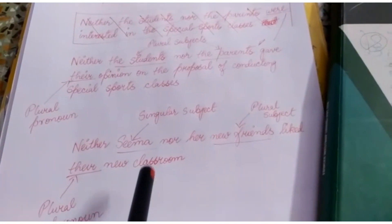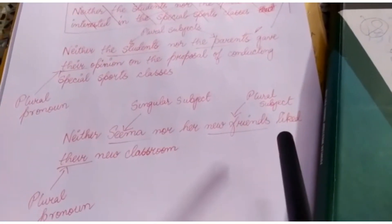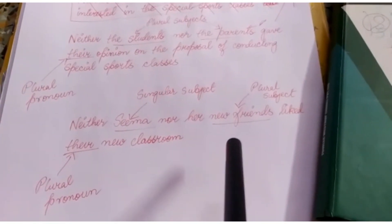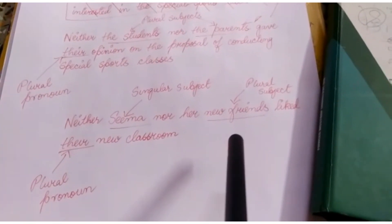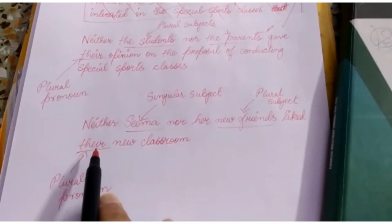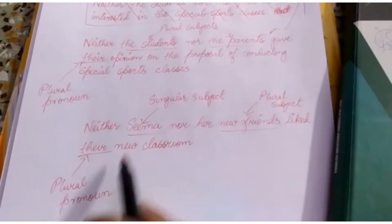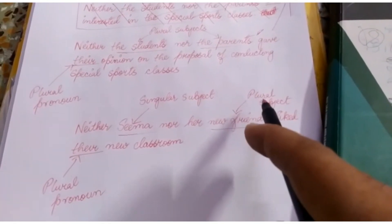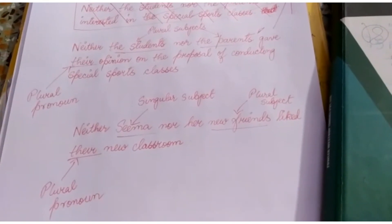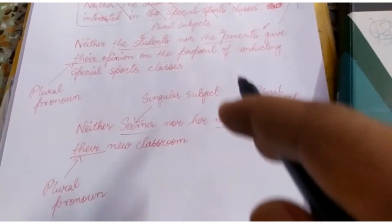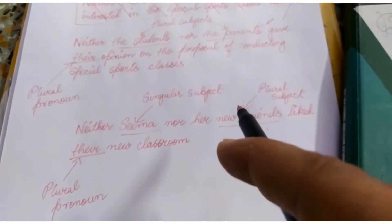What happens when one subject is singular and the other is plural? The same rule applies as with nouns — the pronoun will agree with the subject which is closest to it. If the subject closest to the pronoun is plural, a plural pronoun is used. If the closest subject is singular, a singular pronoun is used. These are some very important rules when using correlative conjunctions.